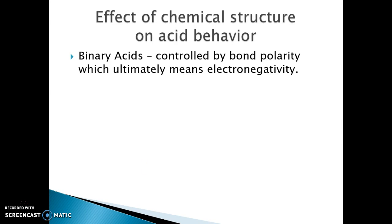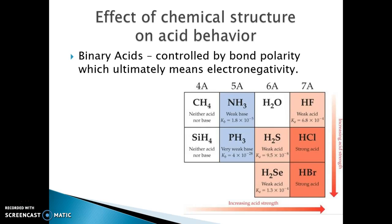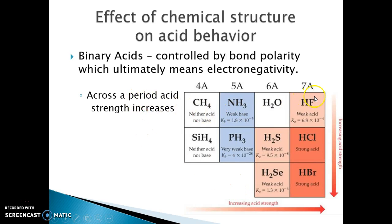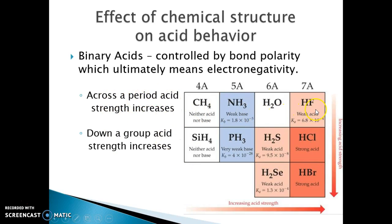Let's look at binary acids. Binary acids are controlled by bond polarity, which ultimately means electronegativity. As you go down a group, electronegativity decreases, so acid strength increases. As you go across a period, acid strength is also increasing. Elements on the left act as very weak bases — more likely to accept an H⁺ than donate one. Going across a period increases acid strength; going down a group decreases it.